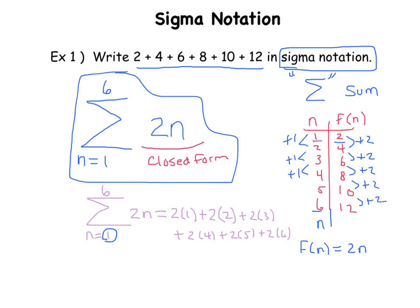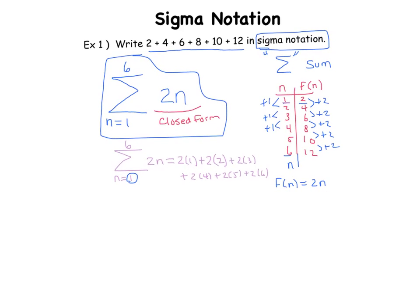2 plus 4 plus 6 plus 8 plus 10 plus 12. Let's just jot that down. So again, this means plug in numbers starting at n equals one and ending at n equals six.